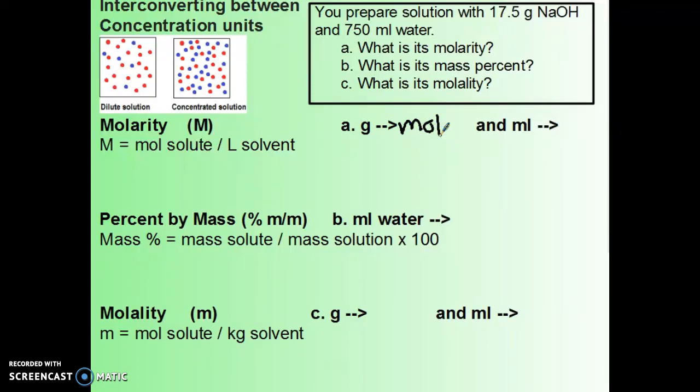So for NaOH, we'll divide by our molar mass. It's about 40 grams per mole. So 17.5 divided by 40 gives me 0.438, and that is moles of NaOH.